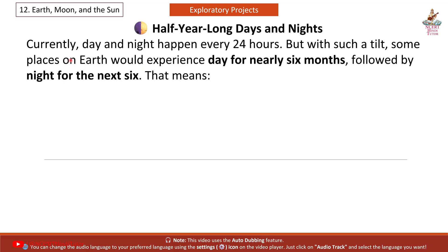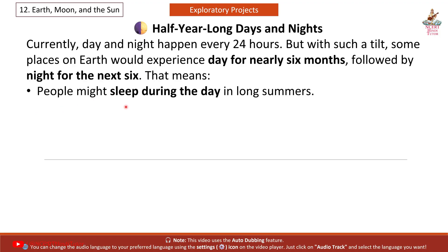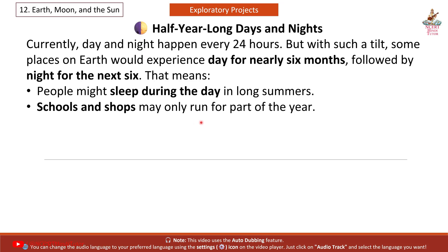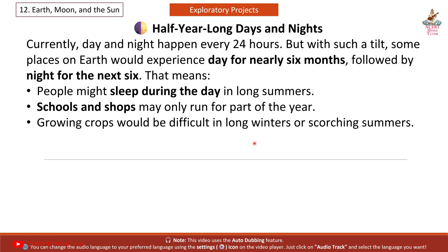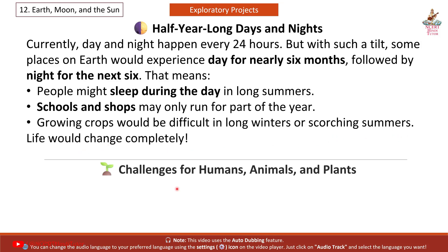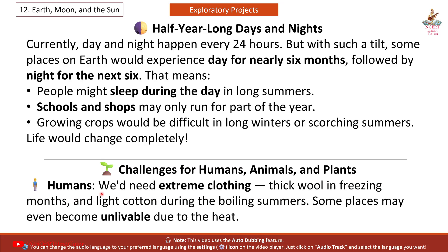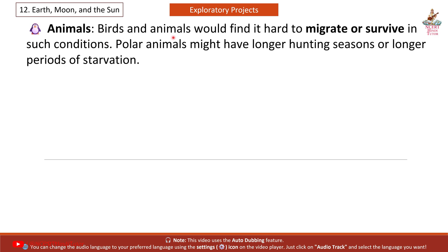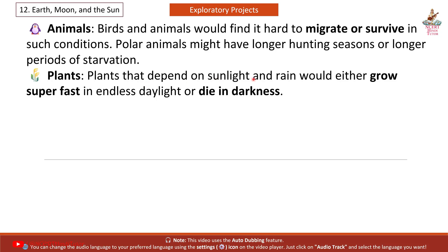Half-year long days and nights. Currently, day and night happen every 24 hours. But with such a tilt, some places on Earth would experience day for nearly 6 months, followed by night for the next 6. Schools and shops may only run for part of the year. Growing crops would be difficult in long winters or scorching summers — life would change completely. Humans would need extreme clothing: thick wool in freezing months and light cotton during boiling summers. Some places may even become unlivable due to the heat. Birds and animals would find it hard to migrate or survive. Polar animals might have longer hunting seasons or longer periods of starvation. Plants that depend on sunlight and rain would either grow super fast in endless daylight or die in darkness.